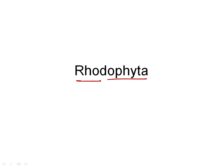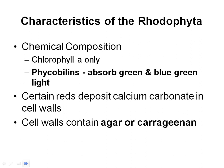Phyta, of course, is plant. Rhodo is red. So, the red algae. We now have our first group that, although they contain chlorophyll, they do not contain chlorophyll A and B — they contain chlorophyll A only. So no chlorophyll B in these kinds.